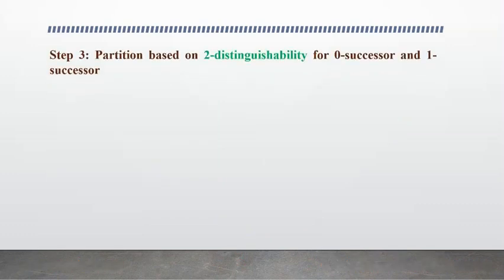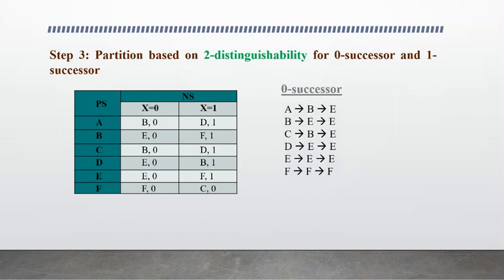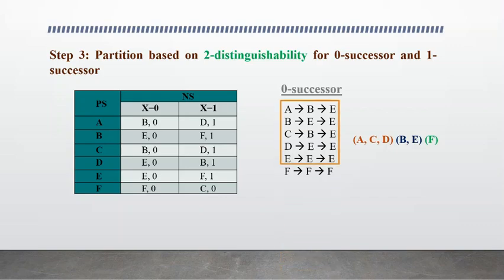Next we need to check the partition based on 2-distinguishability. Here also we need to consider the 0-successor and 1-successor. When we check the 0-successor, state a goes to b, and b goes to e. Looking at all states a through e, they all give next states that belong to the same partition. So there cannot be any further partitions made with the 0-successor.